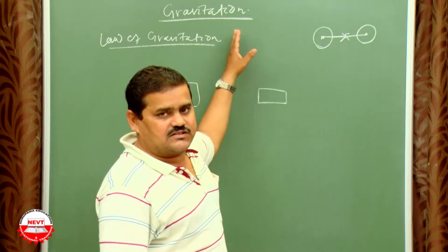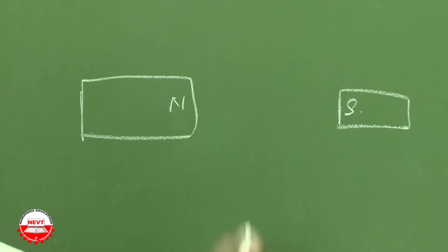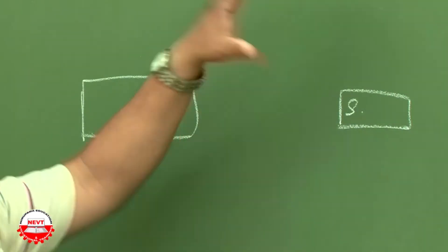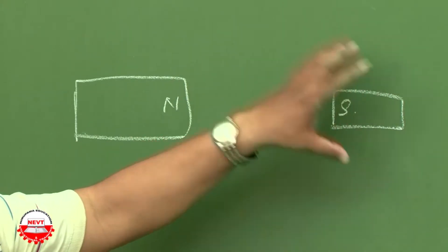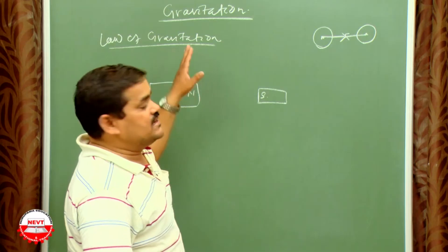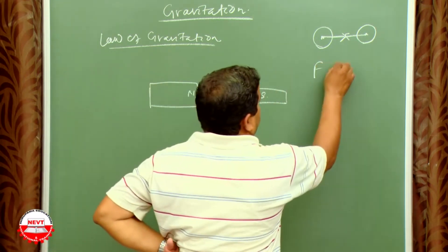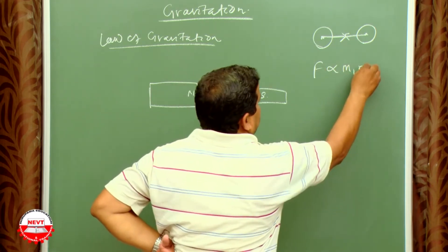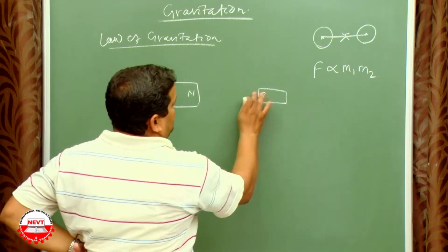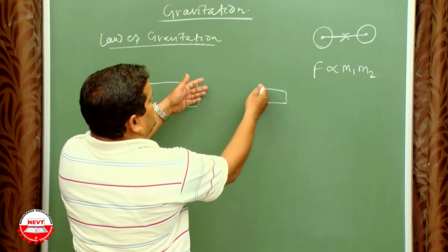To understand the law of gravitation, consider two bar magnets — a North Pole and a South Pole — they have an attractive force. If the magnet is larger, it attracts the other more strongly. If either object's mass increases, the force of attraction also increases. That means the force of attraction is directly proportional to the product of the masses of the first and second objects.